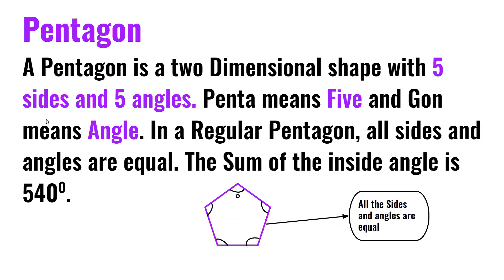A pentagon is a two-dimensional shape with five sides and five angles. Penta means five and gon means angle. In a regular pentagon, all sides and angles are equal. The sum of the inside angles is 540 degrees.